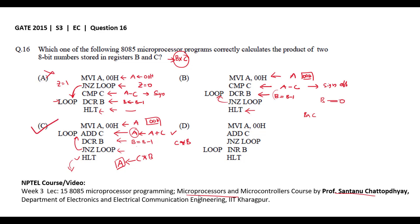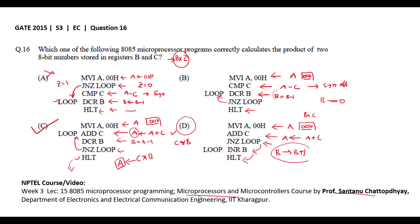Let us also verify Option D. The first instruction loads the accumulator with 00H. Then add C adds the contents of C to the accumulator. It then checks the zero flag, and if the accumulator content is non-zero, it goes to the increment B operation, incrementing B by 1. After that, the halt instruction executes. This program simply increments B by 1 — there is no multiplication operation. Therefore, Option C is confirmed as the correct option.